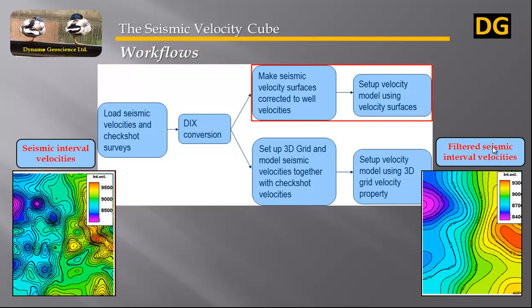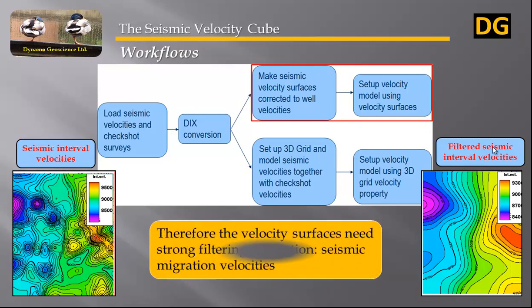In general, stacking velocity can only provide original velocity trend compared to well velocities. Seismic velocity map before and after filtering.